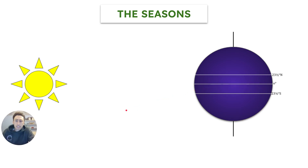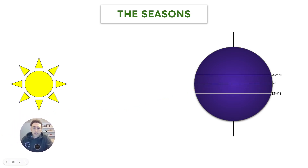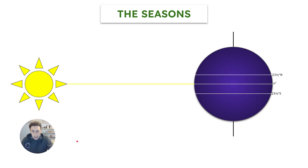Now we have the seasons. What causes the seasons on Earth? We experience different seasons: the winter, the summer, the fall, and the spring. What causes that is the sun's direct rays, which cause the different seasons.